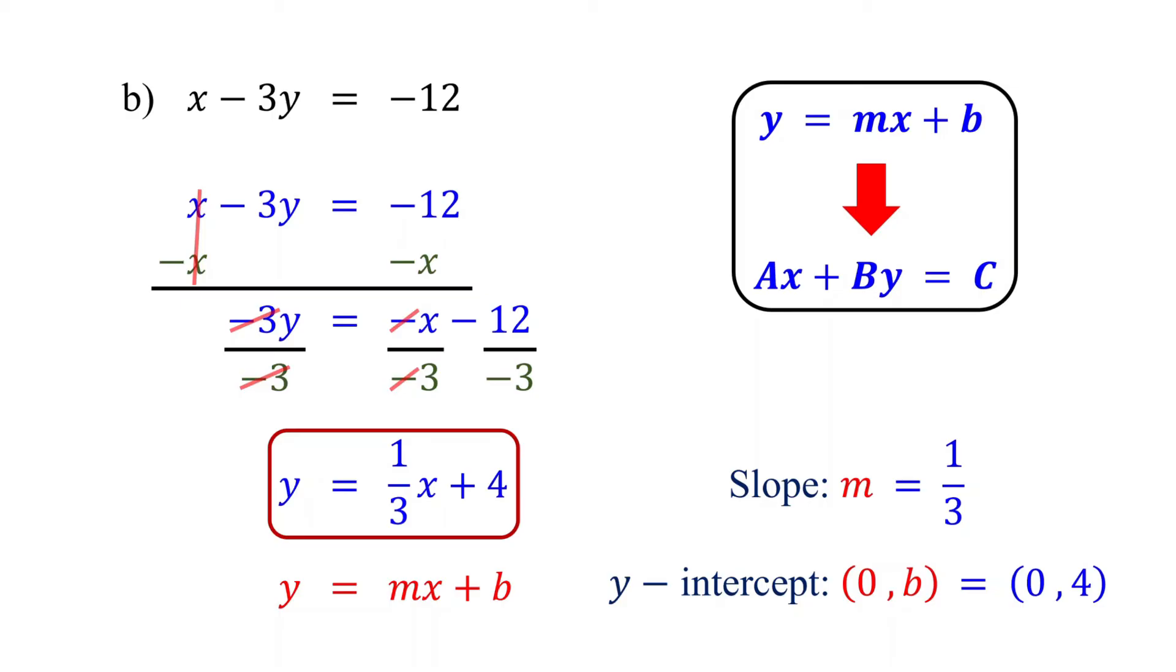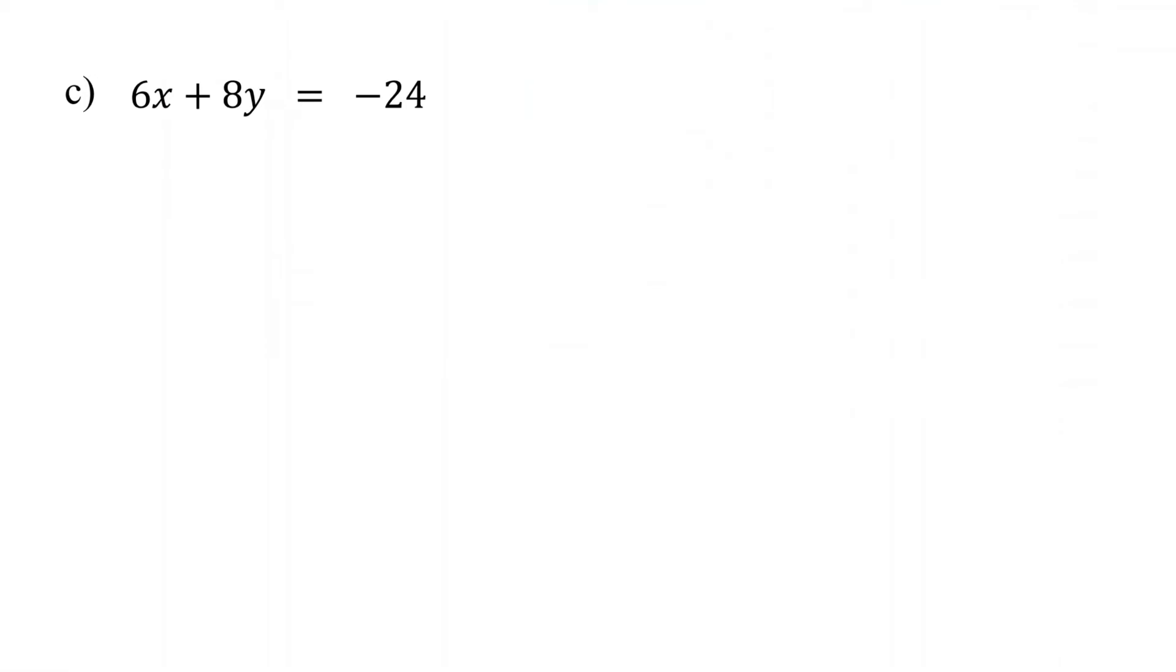But first, let's work on our last example, which is slightly more challenging. First, subtract 6x from both sides to move it to the right side. Then, divide both sides by 8 to isolate y.